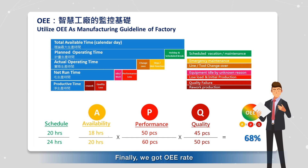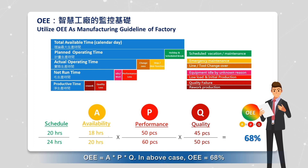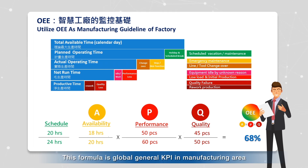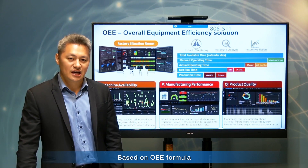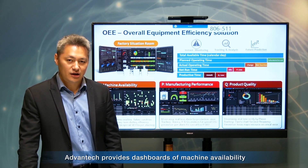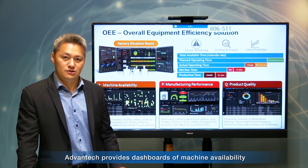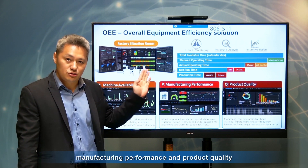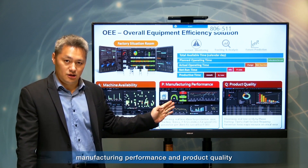Finally, we get the OEE rate. OEE equals A multiplied by P multiplied by Q. In this example, OEE equals 68%. This formula is the global general KPI in the manufacturing area. Based on the OEE formula, Advantech provides a dashboard for machine availability, manufacturing performance, and product quality.